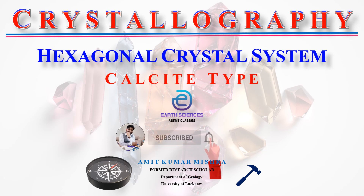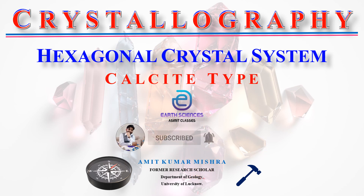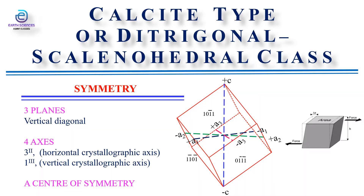Hello and welcome everyone to Earth Science Asimic Classes. Today in this video presentation we will learn about the calcite type of class of the hexagonal crystal system. The calcite type can be obtained by studying a typical form belonging to its class. The form we select for this purpose is the rhombohedron, as shown in this figure.